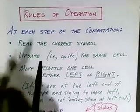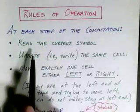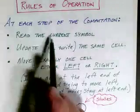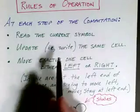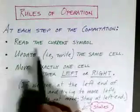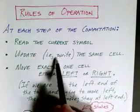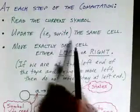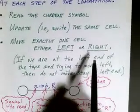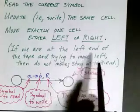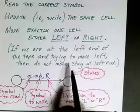Now let's talk about how the Turing machine operates and what rules control its operation. At each step in a computation, the Turing machine first looks at the current symbol underneath the tape head — we look at the cell we're positioned on and ask what symbol is there. That determines which transition we take. Then we update that cell by writing a new symbol, overriding the symbol we just read. Finally we move either one cell to the left or to the right — we do not stay put. If we are at the left end of the tape and try to move left, the Turing machine will stay put.